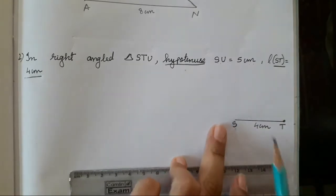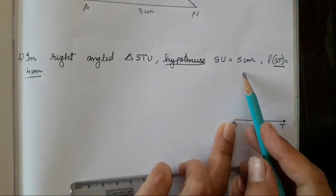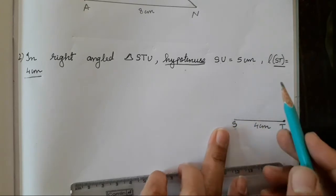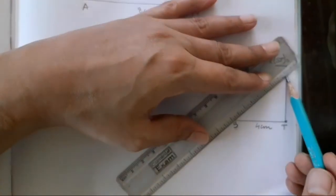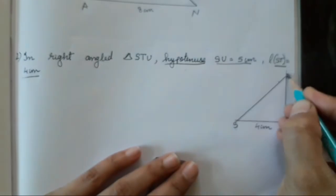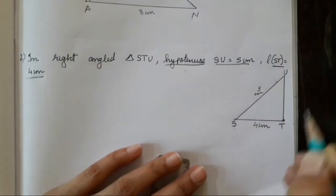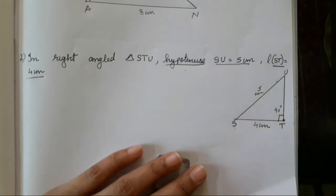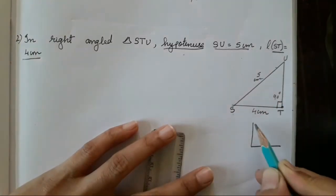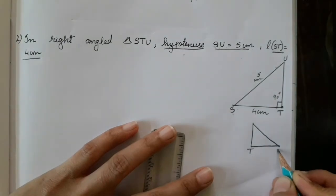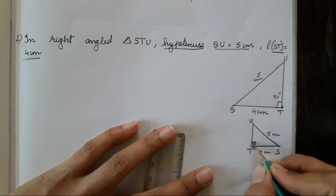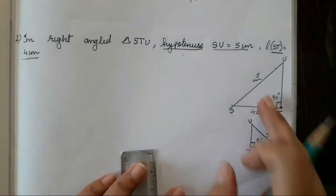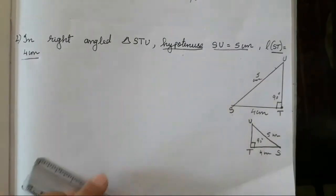SU is 5 cm — you have to decide where to place it. If you take SU here it will not be your hypotenuse, but if you take it on the opposite side it will be. So the 5 cm side is SU as hypotenuse, and T will be 90 degrees. You can also draw this in a flipped orientation — the measurements are going to be the same.